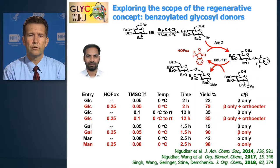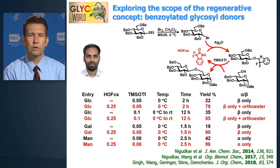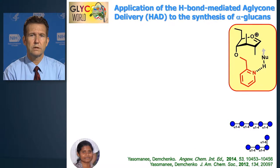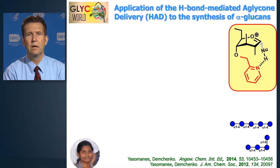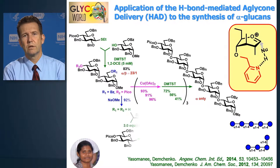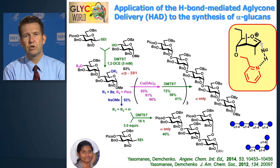This is the Regenerative Glycosylation that we introduced in 2014, and very recently we showed the efficiency of this approach and its application to oligosaccharide synthesis. The Hydrogen Bond Mediated Aglycone Delivery, or HAD, method recently allows us to synthesize very challenging, from a synthetic perspective, glycan structures.